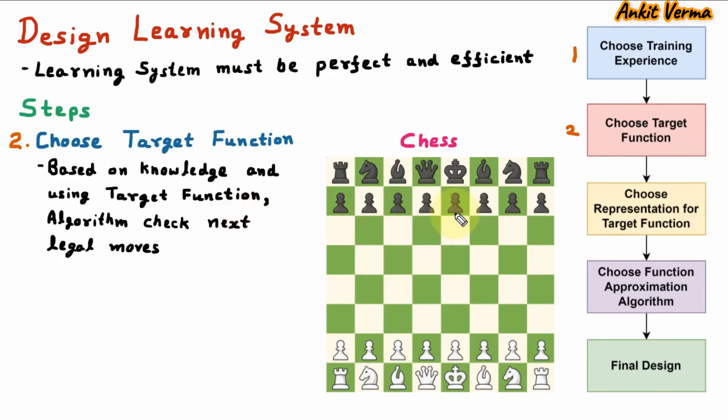So this movement of pawn is the knowledge. To defeat the opponent, we have to defeat the king. So this is our target that we can achieve using target function. So based on the knowledge that movement of pawn and target function, that means defeating the king, the algorithm checks the next legal move.